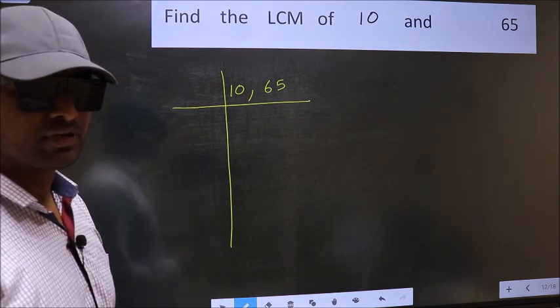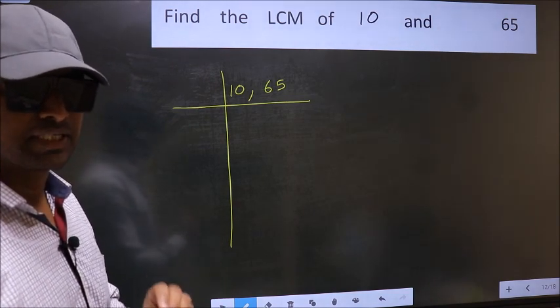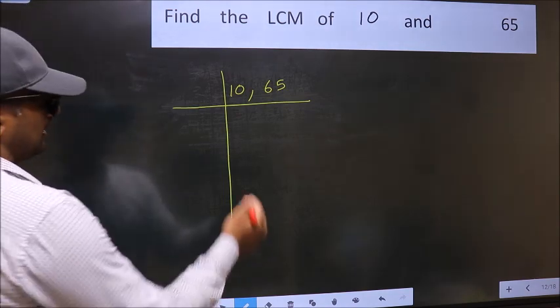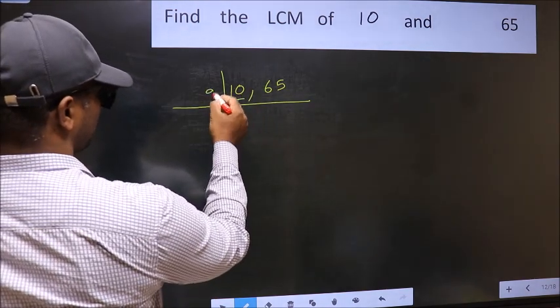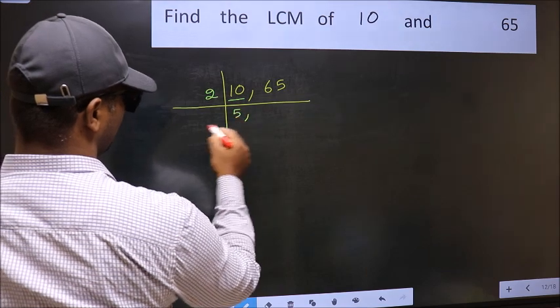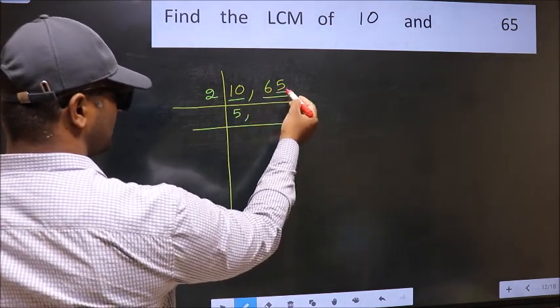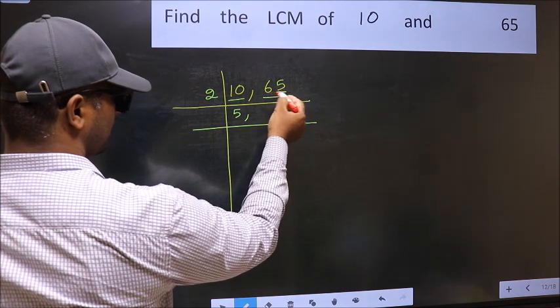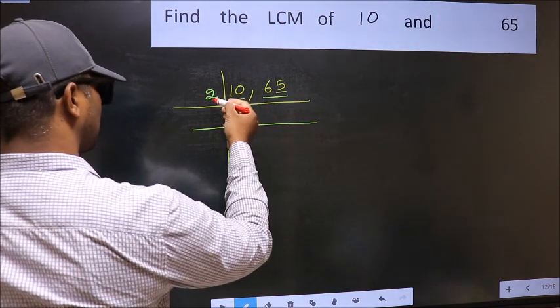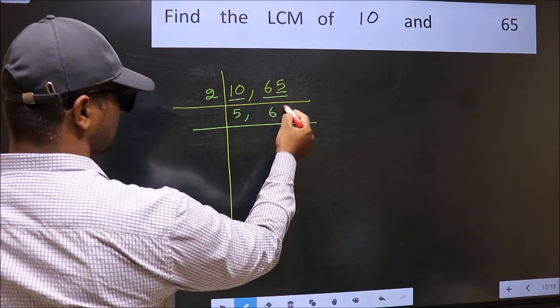Now you should focus on the first number which is 10 here. 10 is 2 times 5. The other number 65, last digit 5, not even. So this number is not divisible by 2. So you write it down as it is.